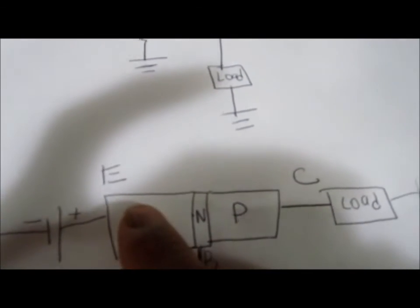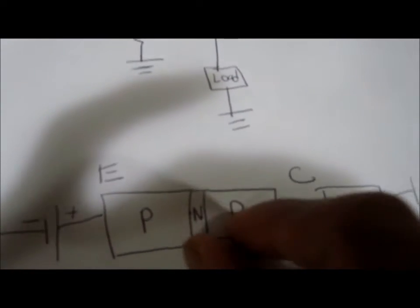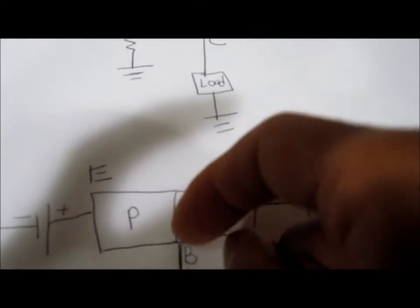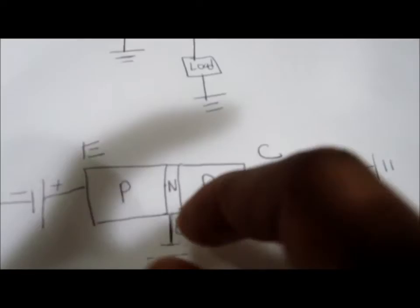As I showed, this shrinks the N region so holes can go across. Without the negative voltage, the N region is too large for holes to flow through, but when you shrink it by bringing out electrons through negative current, holes can flow through to power the load.